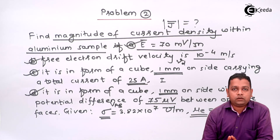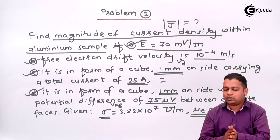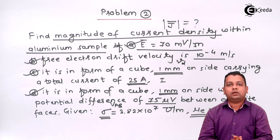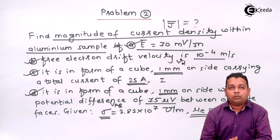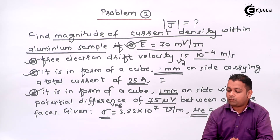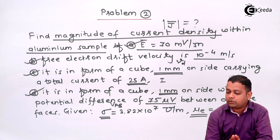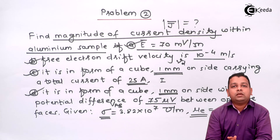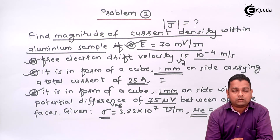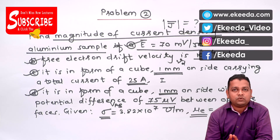In the previous video for problem number one, we determined the magnitude of electric field intensity when current density, drift velocity, potential difference, and total current for a silver sample were given. Here in problem two, we found the magnitude of current density for given electric field intensity, drift velocity, cubical shape with total current, and potential difference. In the subsequent lecture, we will solve problem number three on conductors, properties and boundary conditions. For more information on electromagnetic field theory, subscribe to the Ekida channel.